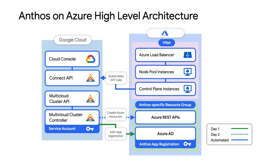Next, we have the Anthos service account. Once the Anthos multi-cloud API is enabled on your Google Cloud project, a Google-managed service account will be automatically created within your project. This service account will be the security principal calling the Azure APIs. Additionally, we have the Anthos app registration. In order for the cluster controller to create Azure resources within your subscription using the Anthos service account, an Azure application registration must be created within the Azure Active Directory. Finally, there's the Connect API. In order to integrate into the Google Cloud console, a Connect agent running on the cluster makes an outbound TLS call to the Connect API.